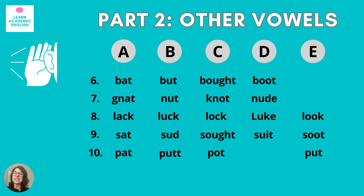In the next part, we're going to listen to other vowels — vowels like 'ah,' 'oh,' 'oo,' 'uh,' and the schwa vowel. Number six: but. Number seven: not. Number eight: luke. Number nine: soot. Number ten: put. Write down the word that you hear.